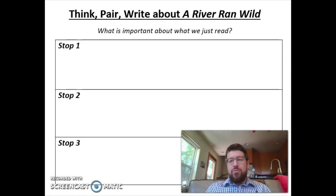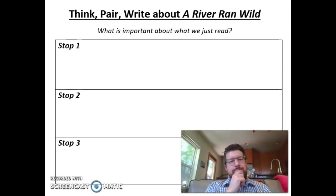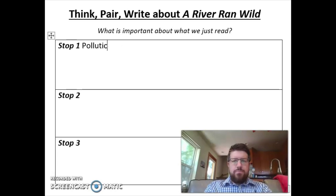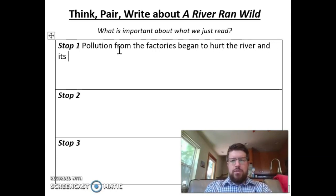Now it's time for us to stop and write down an important idea from the part we just read. I'm going to model this one for you. One important idea in this part of the book is that pollution from the factories is starting to hurt the river and its wildlife. You can write down the exact same note that I did for this stop.